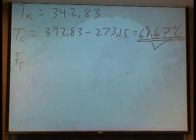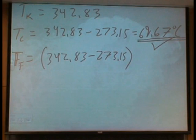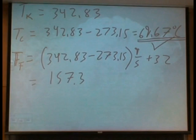So then we can do the same thing in terms of Fahrenheit. T Fahrenheit, I'm going to add an extra, this one in F, is equal to 342.83 minus 273.15 times 9 fifths plus 32, and that's going to be equal to 157.37 degrees Fahrenheit.